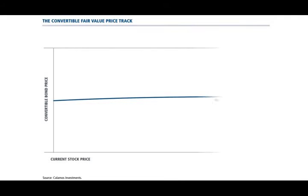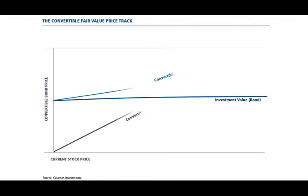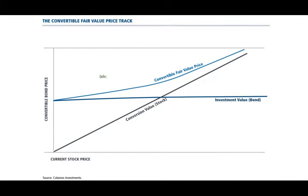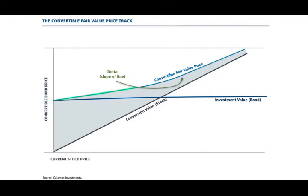Because a convertible bond is convertible into a specific number of underlying shares of its common stock, it has sensitivity to the underlying stock price movement. As the stock price rises, the bond is worth more and becomes more equity-like. As the stock price falls, it is worth less and has more bond-like attributes.